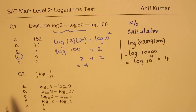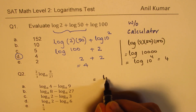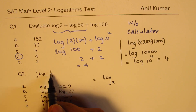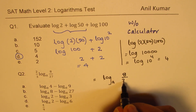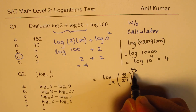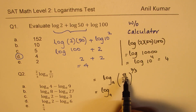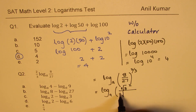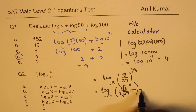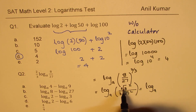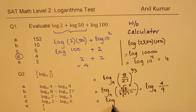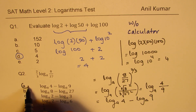Question number 2: (2/3) log_a(8/27). That can be written as log_a of (8/27) to the power of 2/3. We do them individually: cube root of 8 is 2, squared is 4; cube root of 27 is 3, squared is 9. So we get log_a(4/9), which equals log_a(4) minus log_a(9). The first option is the right answer.